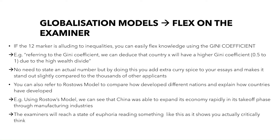There are good models you can use to flex on the examiner in this section. If the exam question is alluding to inequalities, you can flex your knowledge on the Gini coefficient. You can say something like: referring to the Gini coefficient of each country, we can deduce that country X will have a higher Gini coefficient of 0.521 due to a high wealth divide. You don't actually need to state an actual number, but by doing this you add extra depth to your essays and make them stand out compared to other applicants.